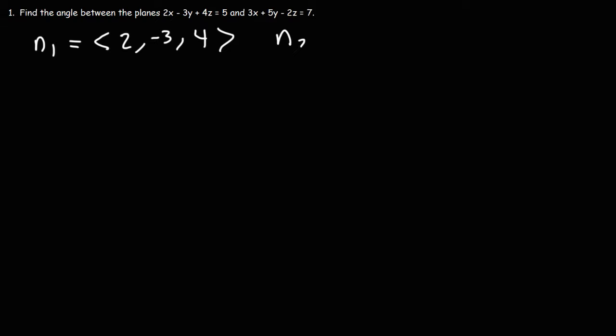Now the second normal vector, that's the normal vector for plane 2. It's going to be 3, 5, and negative 2. So now that we have the two normal vectors, our next step is to find the angle between those two normal vectors.